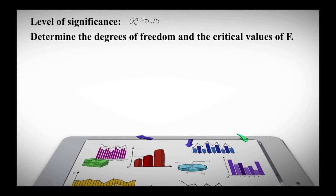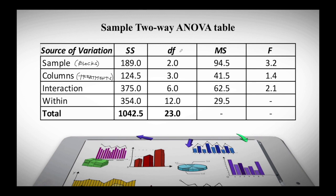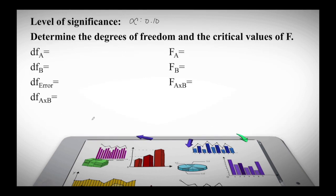Reviewing the ANOVA table structure: factor A corresponds to the blocks/sample row, factor B to the column/treatment row, factor AB to the interaction, and error corresponds to the within-groups term. For degrees of freedom: DF_A (factor A, service centers) = R − 1 = 3 − 1 = 2. DF_B (factor B, television brands) = C − 1 = 4 − 1 = 3.